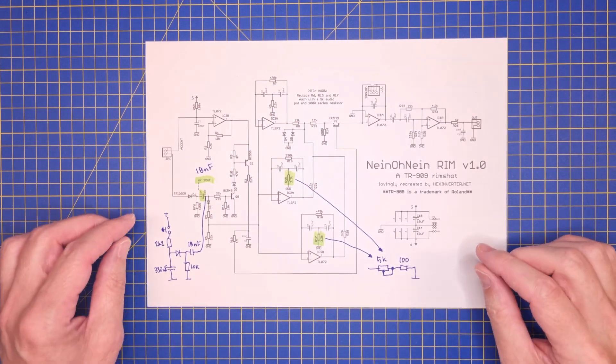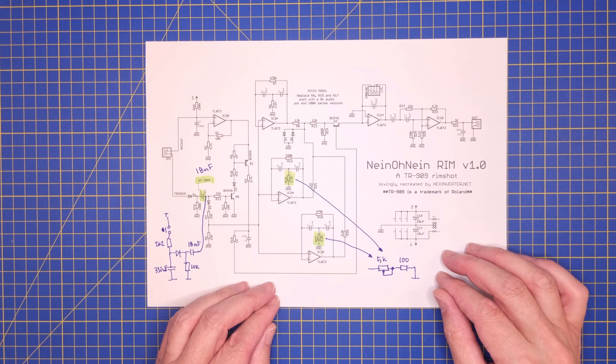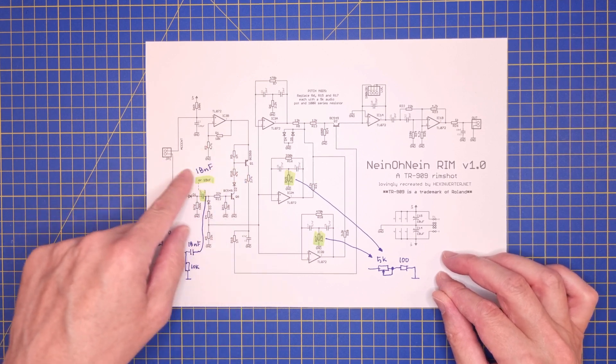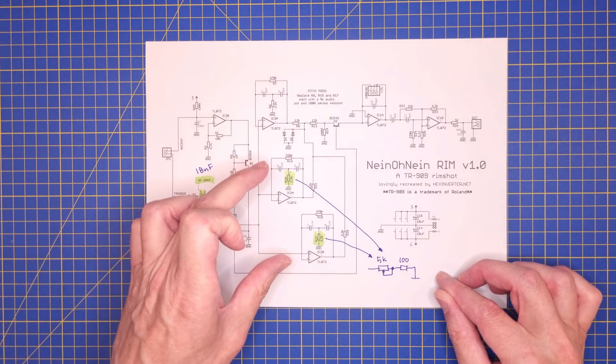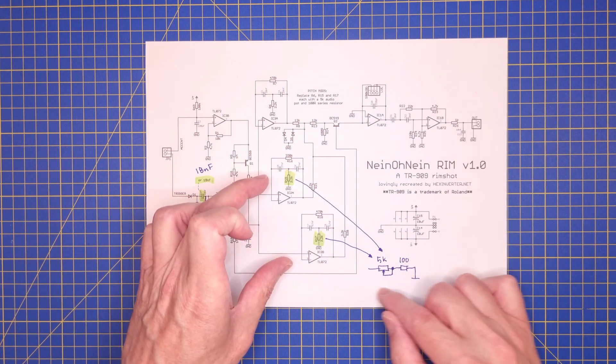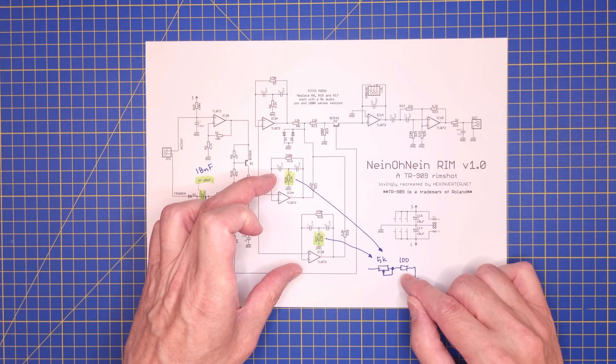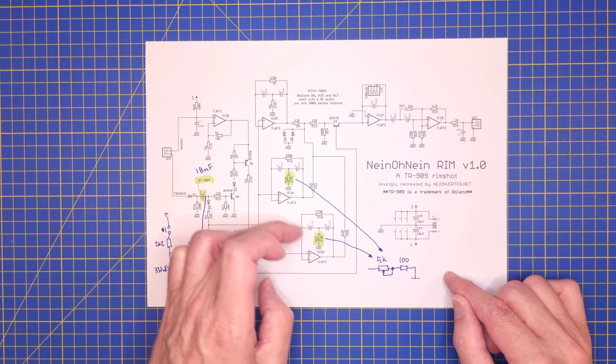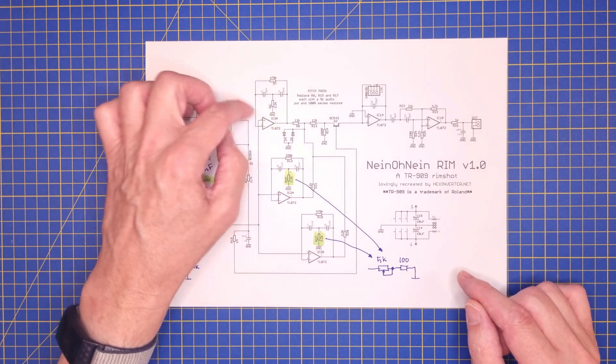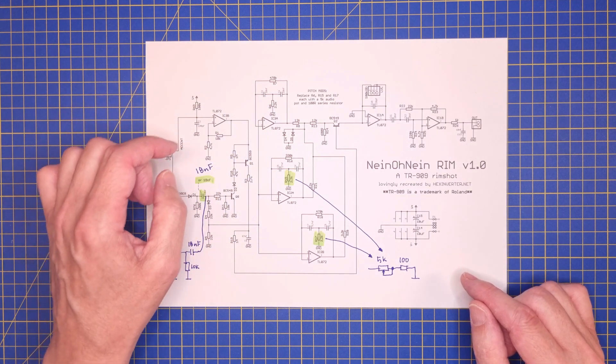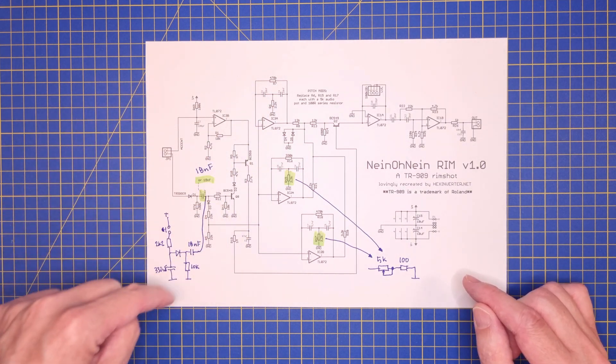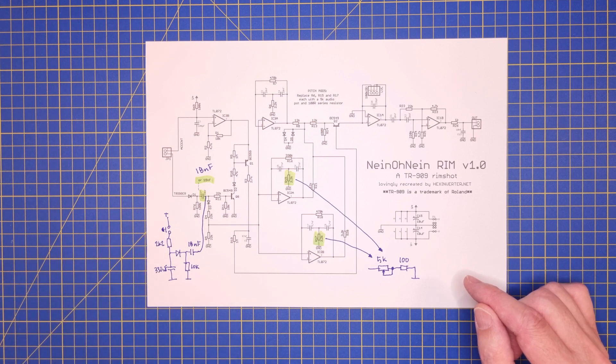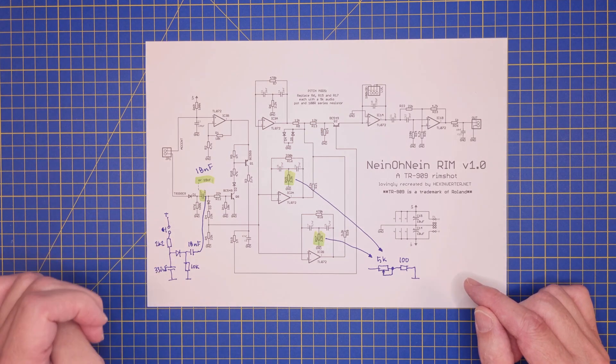So let's look at the results from the breadboarding session here. As I mentioned, I will use 18 nanofarad on the input here. And I will add a pot with 100 ohm for these two bandpass filters. This one will still keep the fixed resistor. And I will add some kind of circuit for the cherry key on the front panel as well.